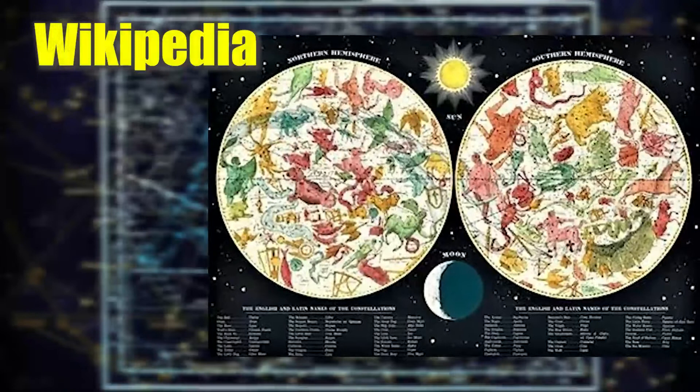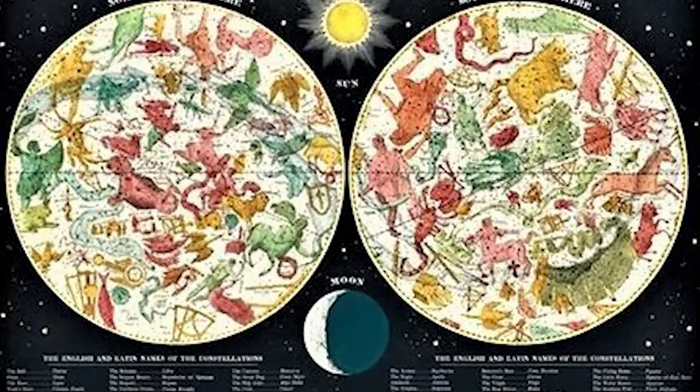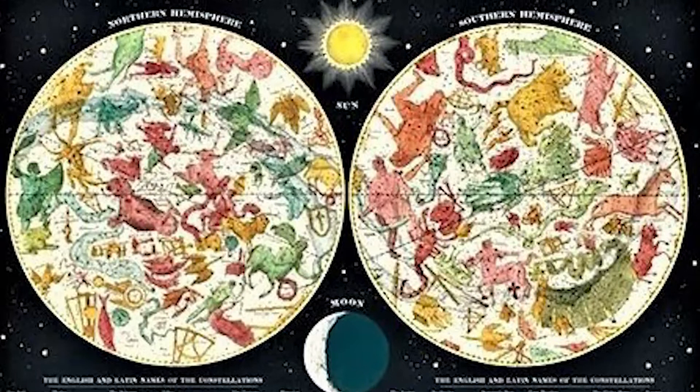A constellation is an area of the celestial sphere in which a group of visible stars forms a perceived outline or pattern, typically representing an animal, mythological subject or inanimate object.